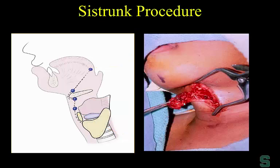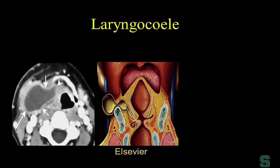The Sistrunk procedure removes the thyroglossal duct cyst: surgeons take a cuff of the tongue base to ensure no residual disease, since the thyroid gland originates at the foramen cecum. A laryngocele is dilatation of the laryngeal ventricle. If limited laterally by the thyrohyoid membrane, it's an internal or simple laryngocele. If it extends outside the thyrohyoid membrane into the neck, it's a complex laryngocele — which matters because an internal one can be removed endoscopically, while a complex one often requires a cervical approach.